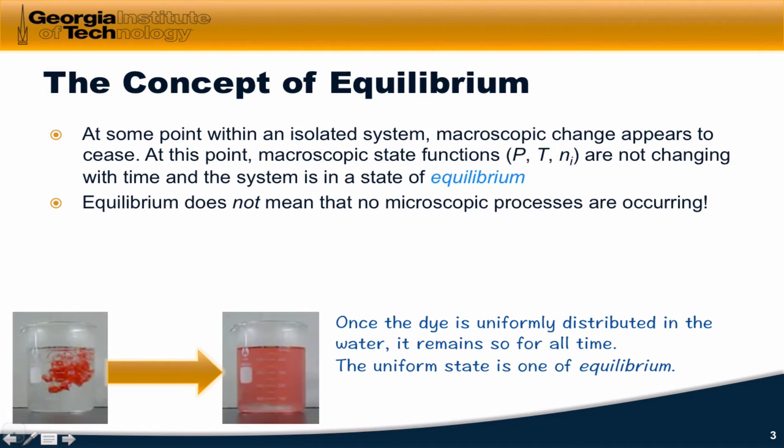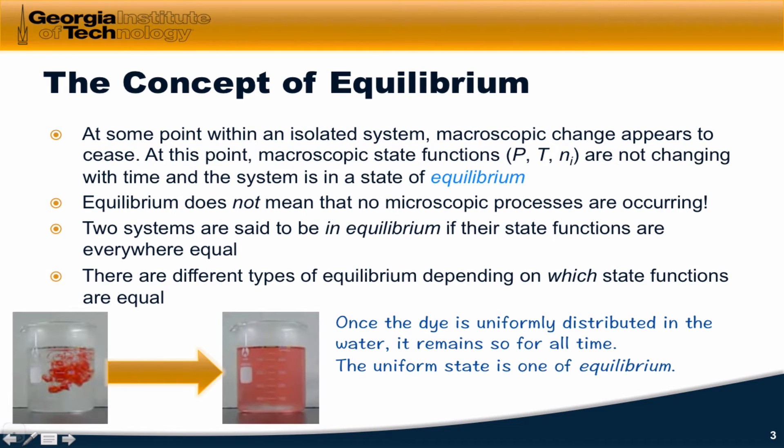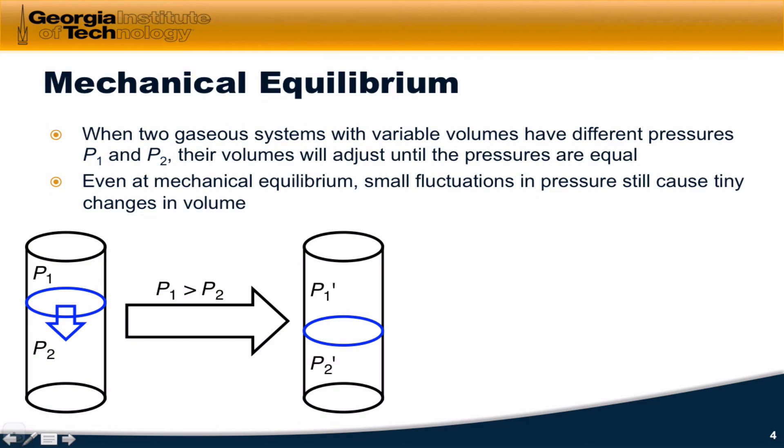An appreciation of equilibrium is very important for chemistry. Two systems are said to be in equilibrium if their state functions are everywhere equal. But there are different types of equilibrium depending on which pairs of state functions are equal, and we use different adjectives to basically characterize these different types of equilibrium.